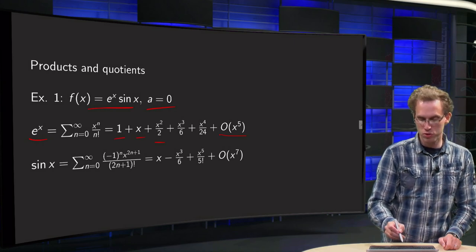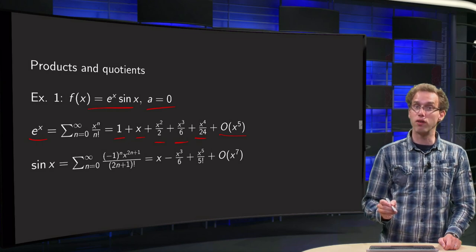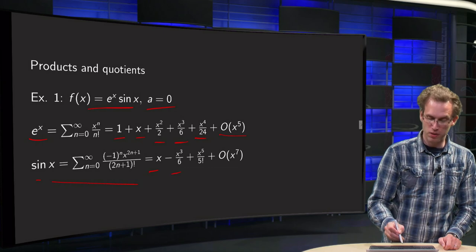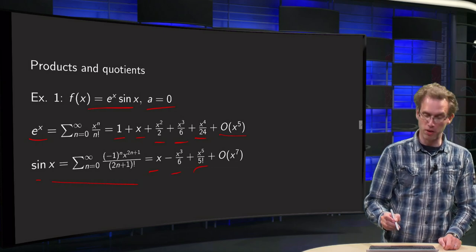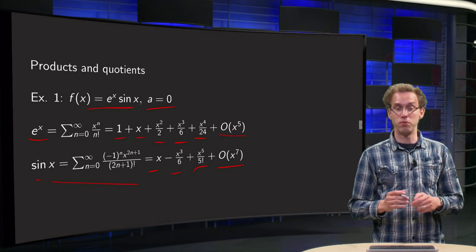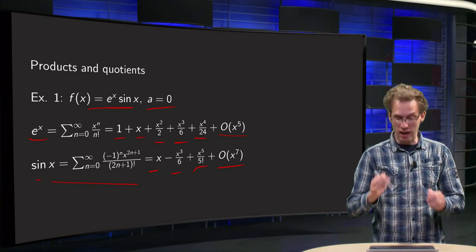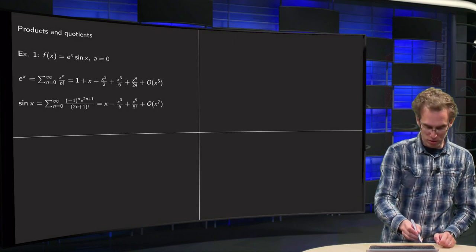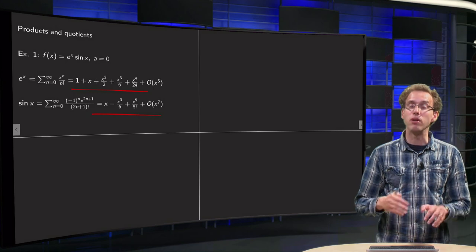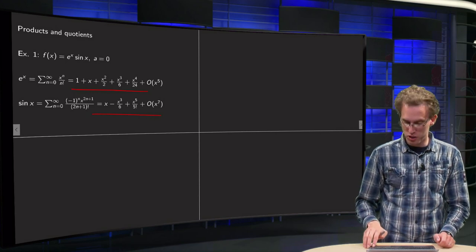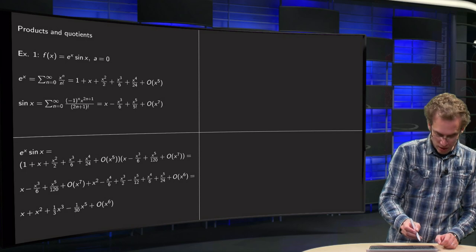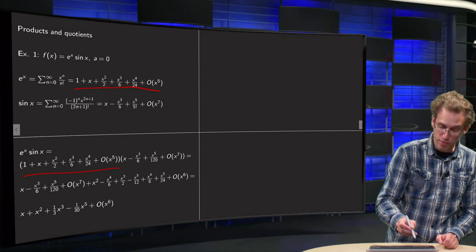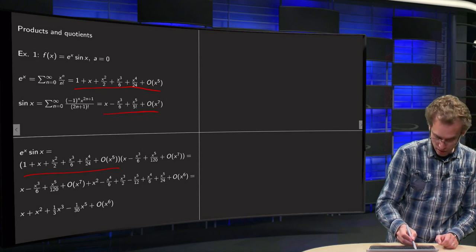So e^x is: 1 plus x plus x squared over 2, plus x cubed over 3 factorial, plus x to the 4th over 4 factorial, and so on. Sine of x is: x minus x cubed over 3 factorial plus x to the power 5 over 5 factorial, plus terms of order x to the power 7 and higher. Now we want to compute the product of those two, up to x to the power 6.